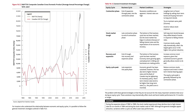The problem with these general strategies is that they do not account for the many important variations that occur during an equity cycle. These variations may dramatically affect stock and bond market performance for 12 months or longer. For example, during the expansion phase of 1982 to 1989, the stock market experienced sharp declines due to high interest rates for six months in 1984 and during the stock market crash of 1987.